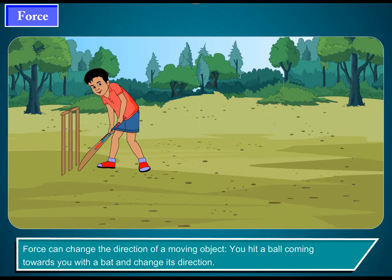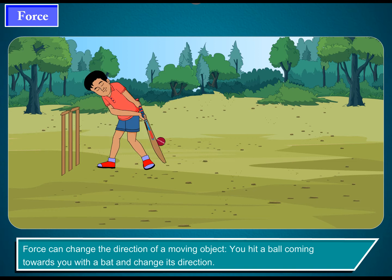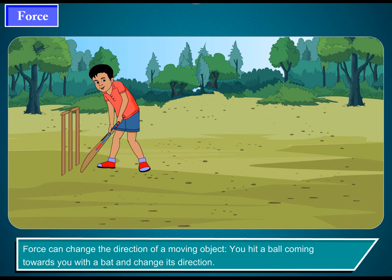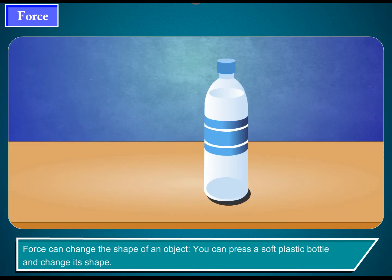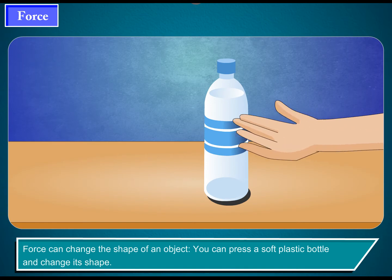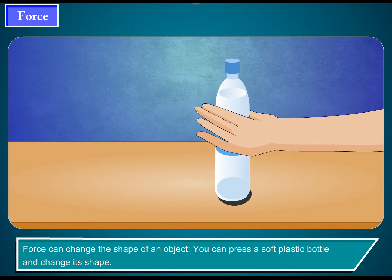Force can change the direction of a moving object. You hit a ball coming towards you with a bat and change its direction. Force can also change the shape of an object. You can press a soft plastic bottle and change its shape.